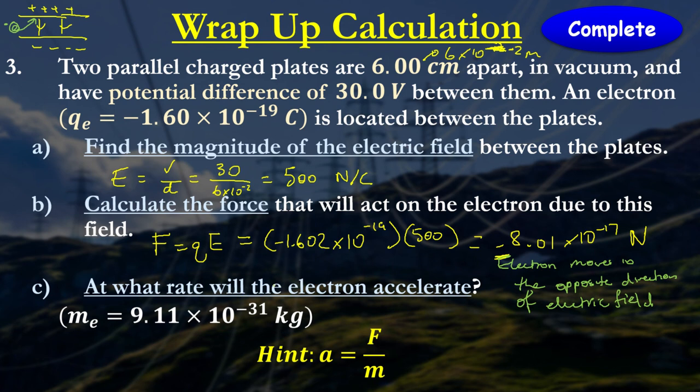The last one is, what's the rate of acceleration of the electron? So I know what the force is. The force is minus 8.01 times 10 to the minus 17. The mass of the electron is also found in your formula sheet. Substitute that in and see what you get. And we get minus 8.79 times 10 to the power of 13 meters per second squared. So that's the acceleration the electron experiences when it gets attracted to the positive plate.